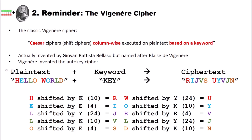How does the original or classic Vigenère cipher work? Let's look at an example. We again have a plaintext — additionally we need a keyword. For instance, we have 'hello world' and our keyword is just 'key'. Then we obtain our ciphertext, which in this case is R-I-J-V-S-U-Y-V-J-N. How does this work? We look at the first letter in our plaintext and at our keyword.